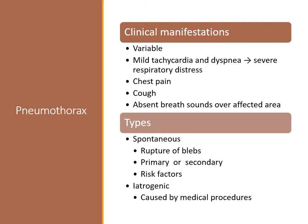A spontaneous pneumothorax usually occurs from the rupture of small blebs or air-filled sacs located on the surface of the lung. These blebs occur in healthy young individuals or as a result of lung disease such as COPD, asthma, cystic fibrosis, or pneumonia. Smoking increases the risk for bleb formation. Other risk factors include being tall and thin, male, a family history, or previous spontaneous pneumothoraxes.